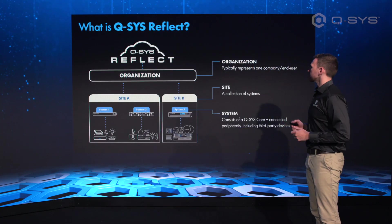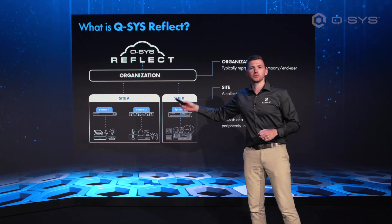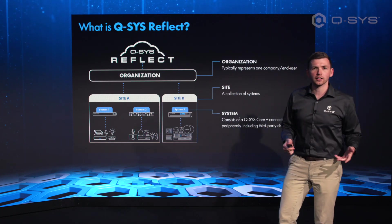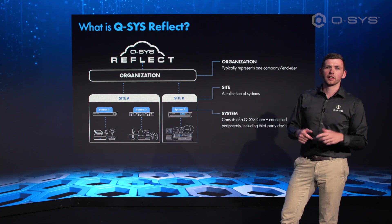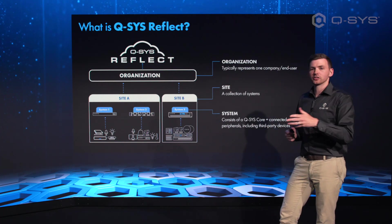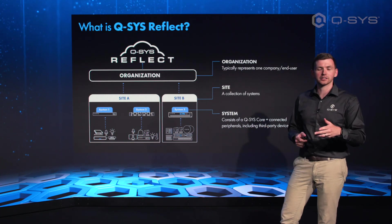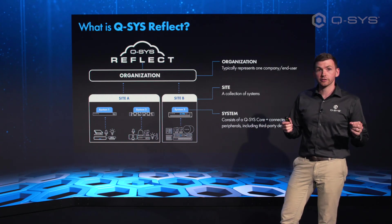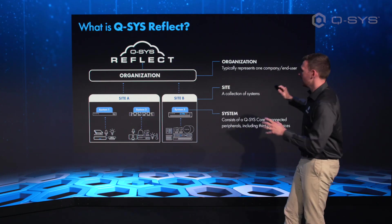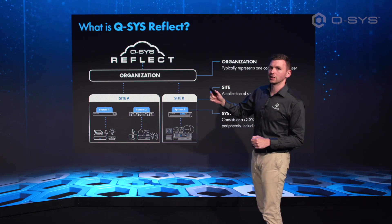So we can see here we have something called the Reflect Organization. That would be, for example, a hotel company — like the world famous fake hotel chain. You might have the Los Angeles location, London, and Paris, and these could all be different sites within your organization. A site has different systems within it.